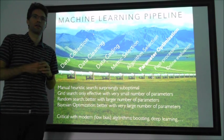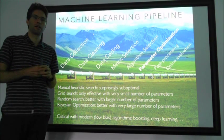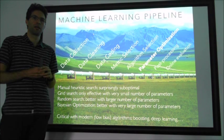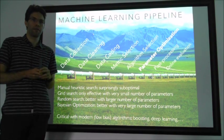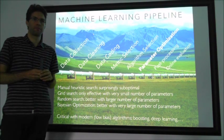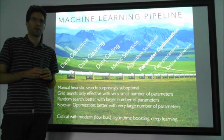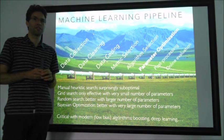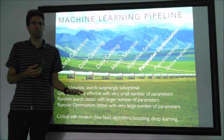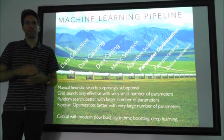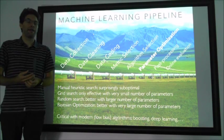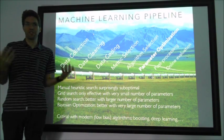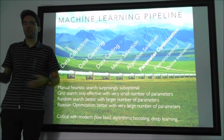When talking about parameter optimization, is this executing models through parameter values, or pure prediction of parameters without executing models? It does execute models — it's also called hyperparameter optimization for this reason. It's a kind of parameter search rather than internal model optimization — an optimization of the parameter space of algorithms.